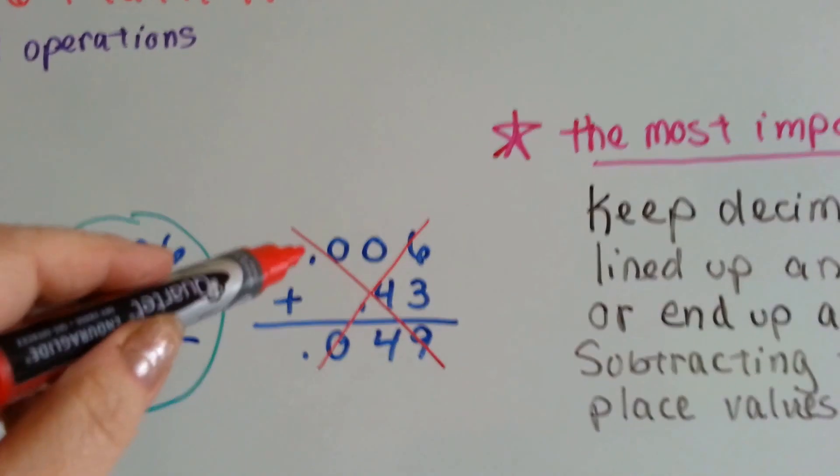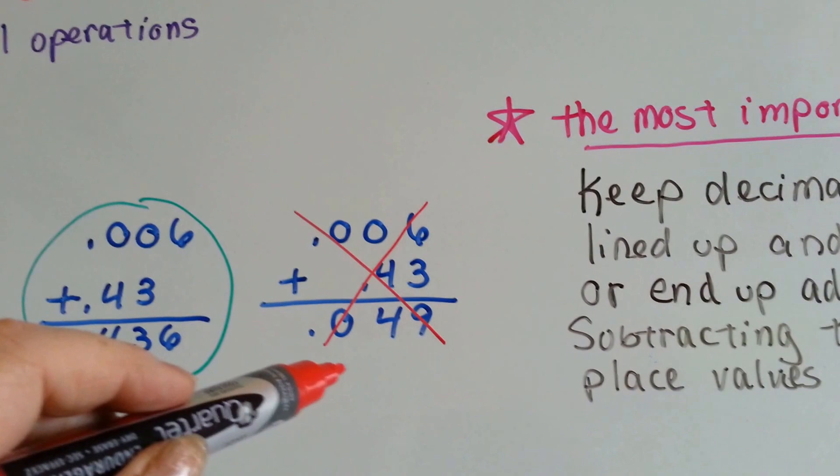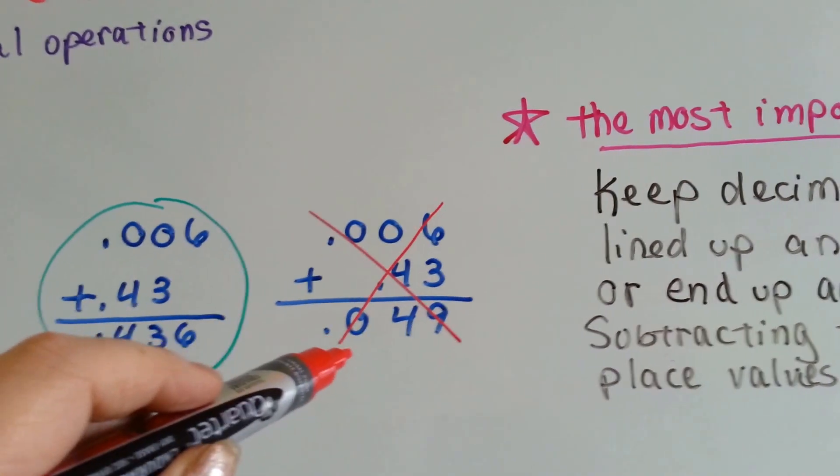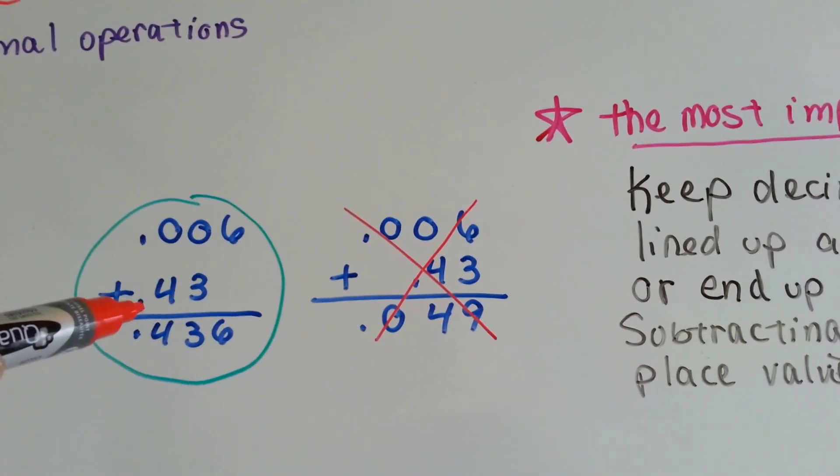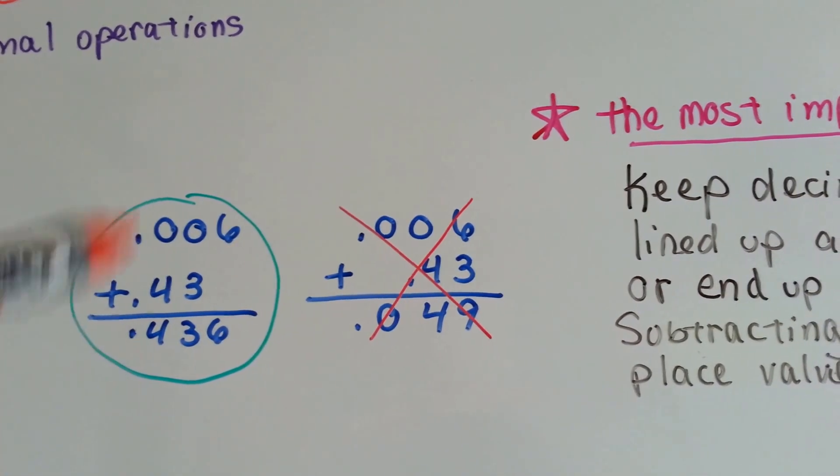If our decimal point is here and we line it up like this, we end up adding straight up and down and we get the wrong answer. We have to remember that even if there's an empty space, we have to line our decimal points up all nice and pretty.